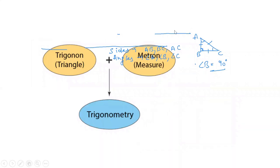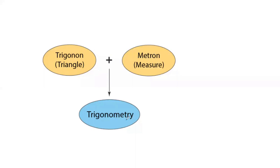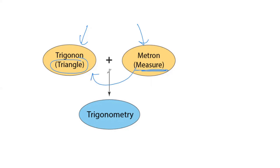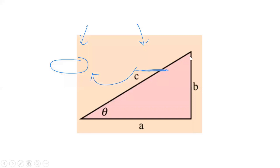Trigonometry is a word that comes from two parts: 'trigon' and 'metron.' Trigon means triangle and metron means measurement. So trigonometry means you are measuring either the angles or the lengths of the sides of a triangle. That is the full meaning of the word trigonometry.